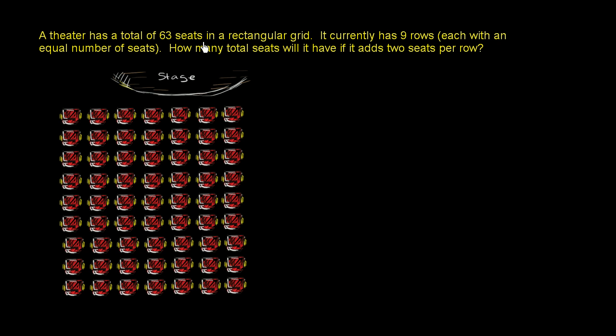A theater has a total of 63 seats in a rectangular grid. Here they are right over here. It currently has nine rows, each with an equal number of seats. We see that.